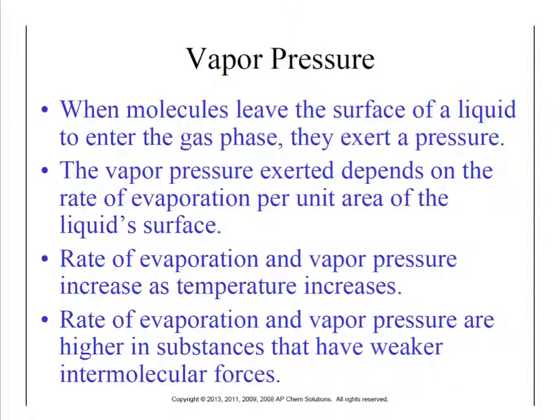Vapor pressure and evaporation are both higher in substances that have weak intermolecular forces. If something has weak intermolecular forces, it's pretty easy for it to enter the gaseous state, which means it's going to have a high vapor pressure. If we think of something like hexanes, which is a liquid that has very weak intermolecular forces — it only has London dispersion forces — its vapor pressure is going to be very high, and it's going to evaporate very quickly.